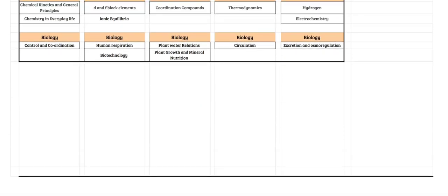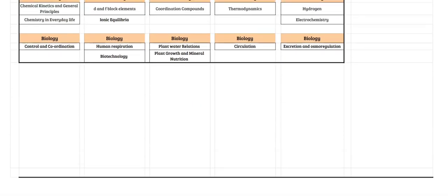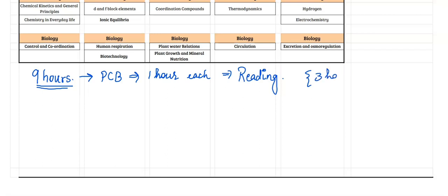Let's see what we can do on a daily basis. On a daily basis you'll be investing around nine hours. Out of which, for the ones who are doing PCB, you will invest one hour for each subject in reading. Reading is extremely important. You will be investing one hour each, that's like three hours on a daily basis for reading.